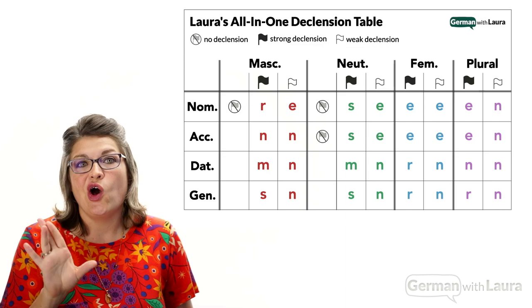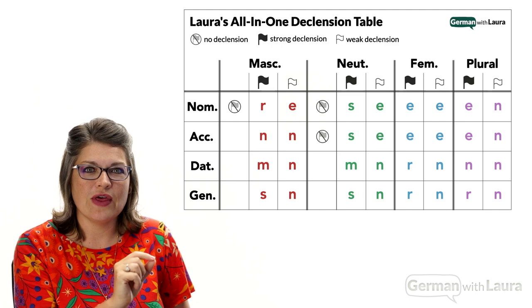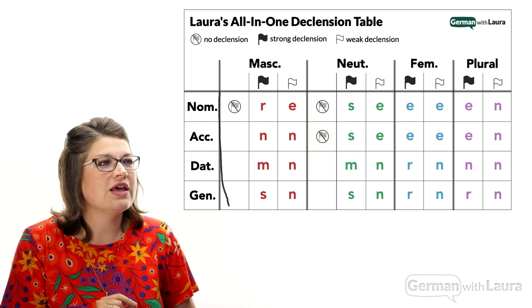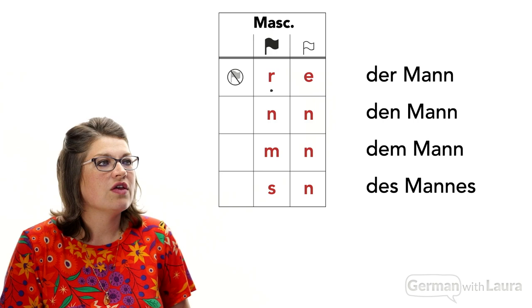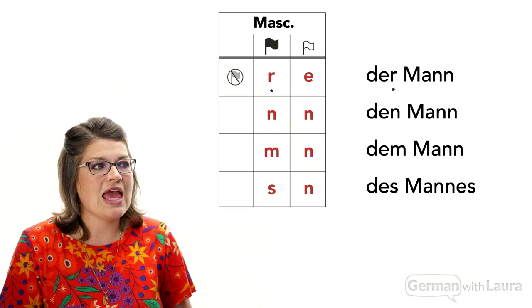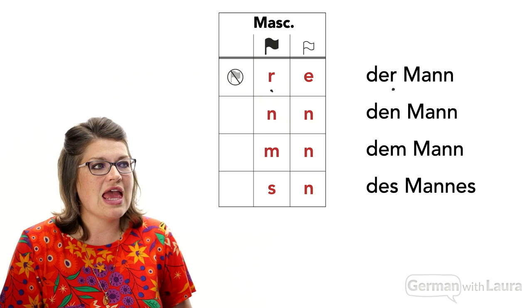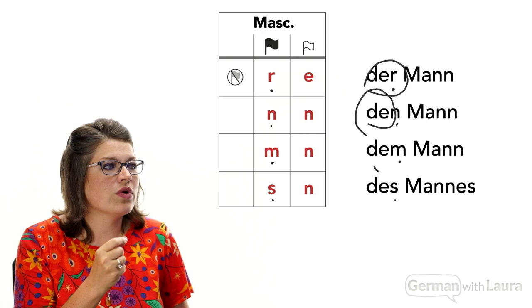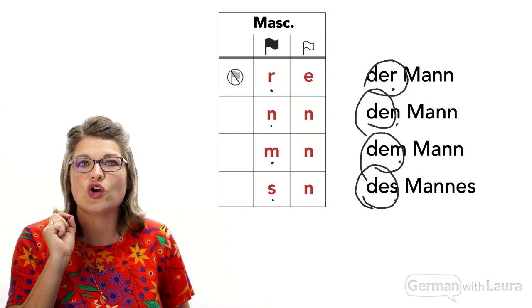Now check this out. This full table here — this is the full shebang, you need this. We're going to break this down in this video, but we're going to start by looking at this column right here. Notice how in this table we have the R lining up with der Mann, an N lining up with den Mann, an M lining up with dem Mann, and then an S lining up with des Mannes. These single letter changes to the ends of how we're saying 'the' in each of these versions of Mann are called declensions.